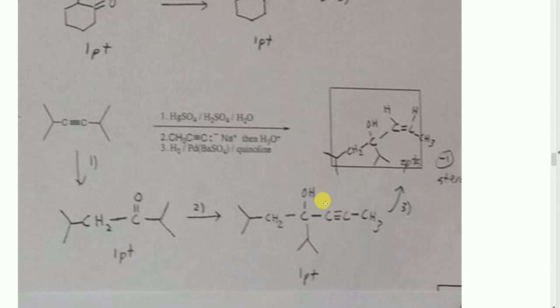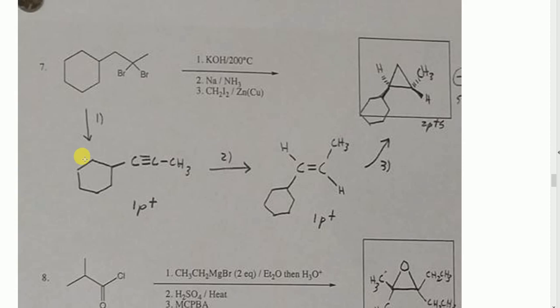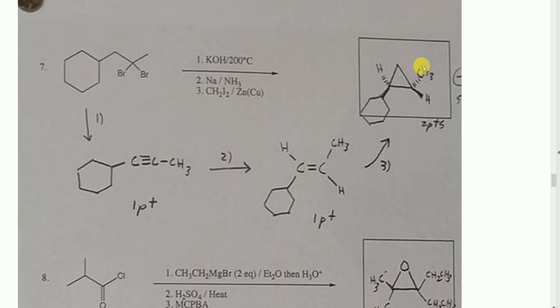The acetylide anion acts as a nucleophile attacking an electrophile, then H3O⁺ protonates the oxygen. After that, H2/Pd·BaSO4 with quinoline is Lindlar's catalyst — it adds hydrogens syn to the triple bond, converting it to a cis (Z) double bond. KOH at 200°C forms the nearest internal triple bond from a vicinal or geminal dihalide. NaNH3 adds hydrogens trans to the triple bond.